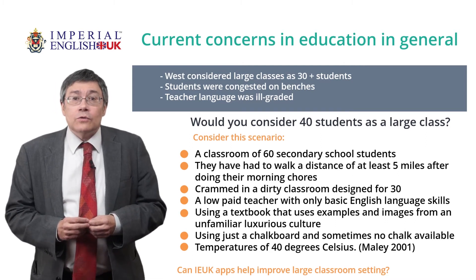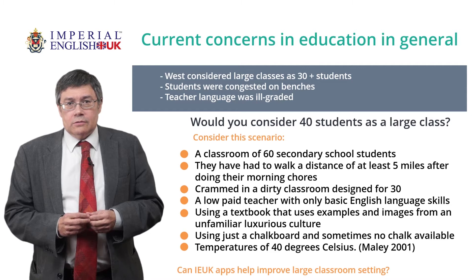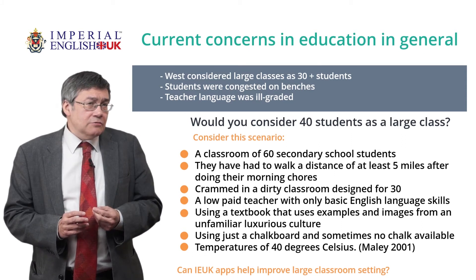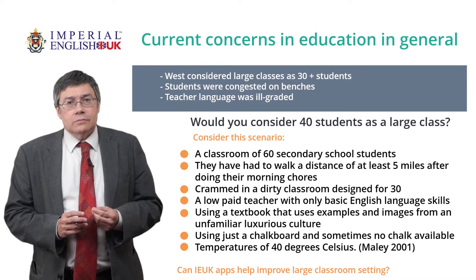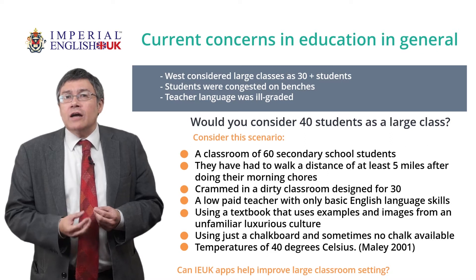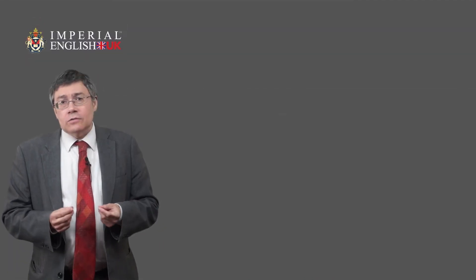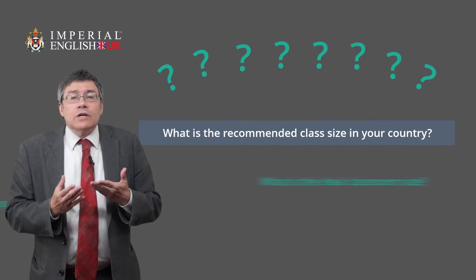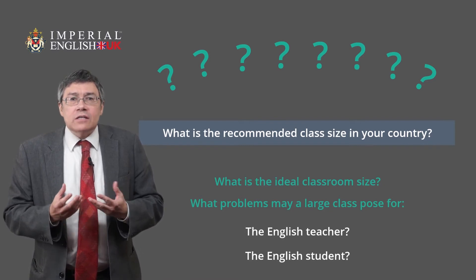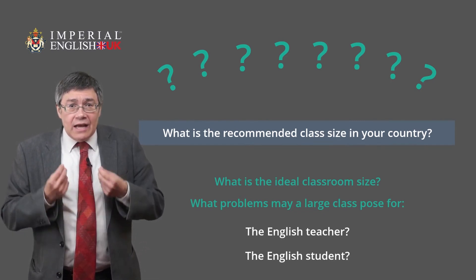Alan Maley's comment also highlights other factors that can play a role. Do you feel that any of these points are more serious issues than the actual student numbers in the classroom? Would you say that the approach taken by the Imperial English apps might improve a large classroom setting? Think about your teaching context or learning experience and your country as a whole. What is the recommended class size? What would be the ideal class size for you as a teacher? What kind of problems could a large class pose for the teacher and student?